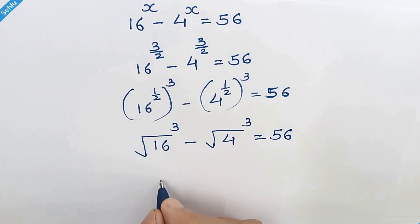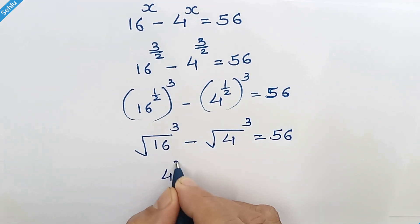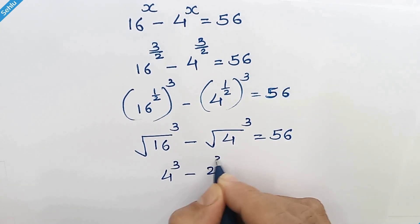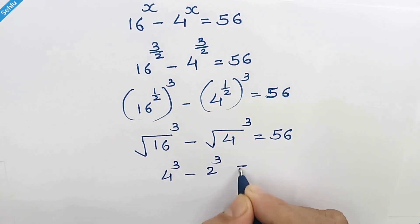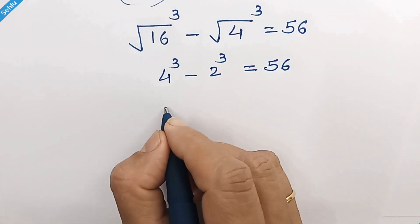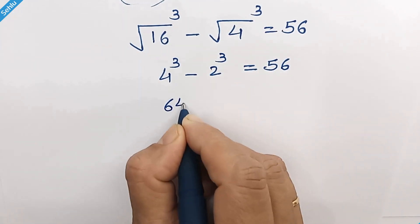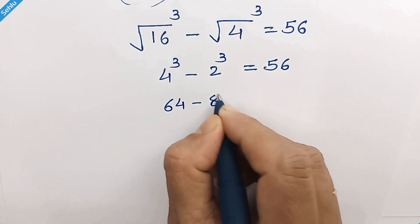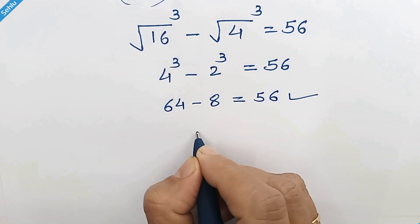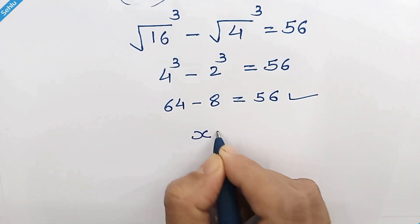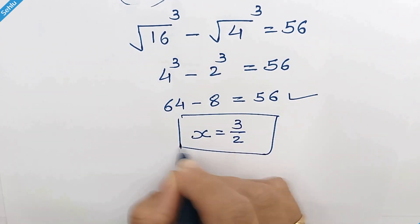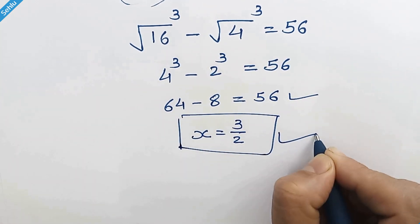So we have 4 cubed minus — since square root of 4 is 2 — 2 cubed is equal to 56. That gives us 64 minus 8 is equal to 56, which confirms that x equal to 3 over 2 is the correct answer.